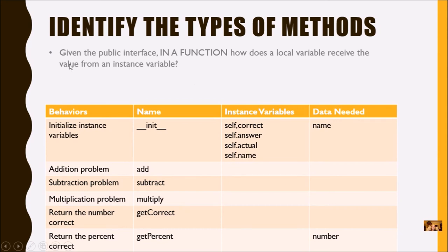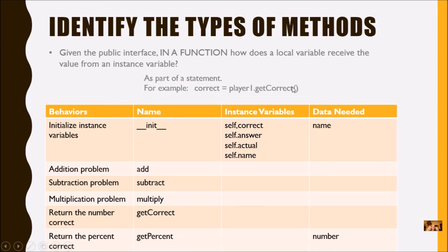Given the public interface, in the function, how does a local variable receive a value from an instance variable? The instance variable is in the method — to get it from the method to a function, it's going to be part of an assignment statement. The return happens in the method, and in the function it's received as an assignment statement. These two go together: on the method's end it's a return, on the function's end it's an assignment statement.